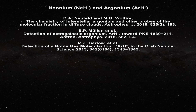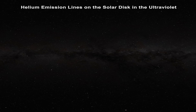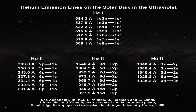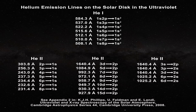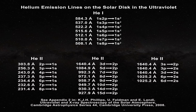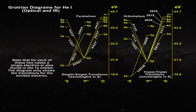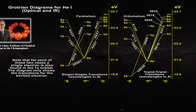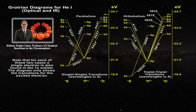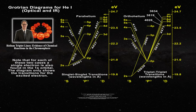Now let us move to helium. Like the other noble gases, helium exhibits numerous emission lines in the UV as summarized in this table. Lines from both helium-1 and helium-2 are observed. In order to better discuss helium, we need to examine the Grotrian diagrams for the helium-1 singlet and triplet lines as presented here and as previously discussed in this video. In addition, I list all of the helium transitions for helium-1 which have been detected in chromospheric emission spectra as reported in these papers.